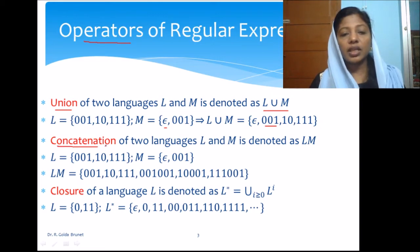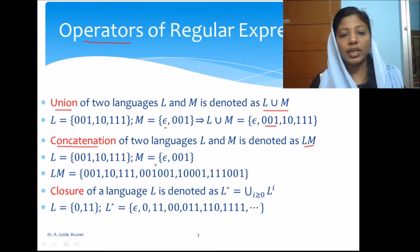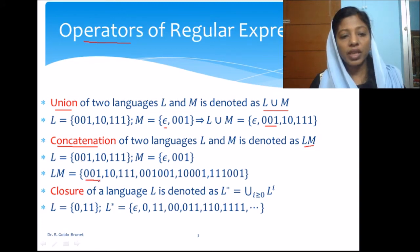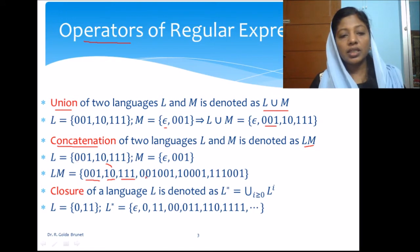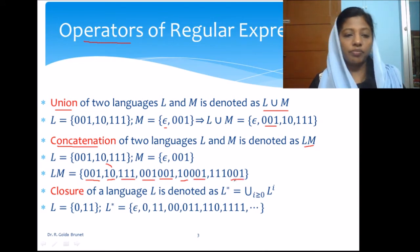The next operation is concatenation. Concatenation of two languages L and M is denoted as LM. If L is the same set {001, 10, 111} and M is {ε, 001}, then LM will be: 001 from L concatenated with ε from M, 10 from L concatenated with ε, 111 from L concatenated with ε, and then all strings from L concatenated with 001 from M. So this is LM.